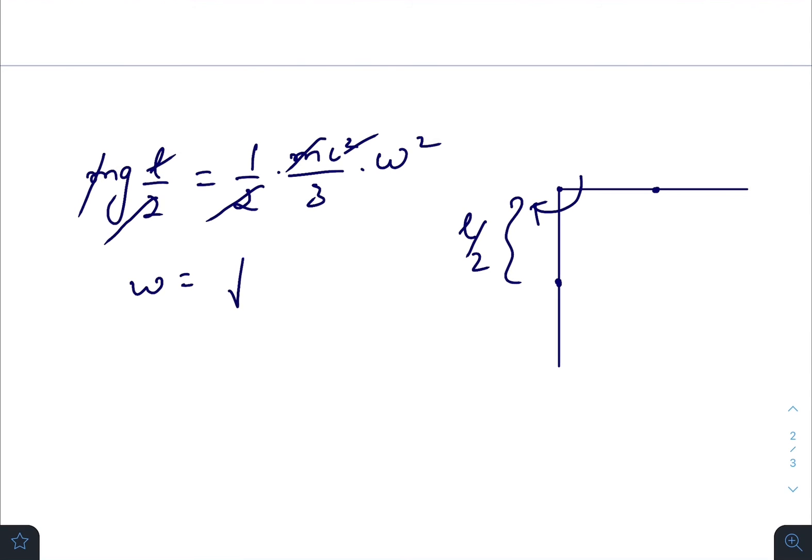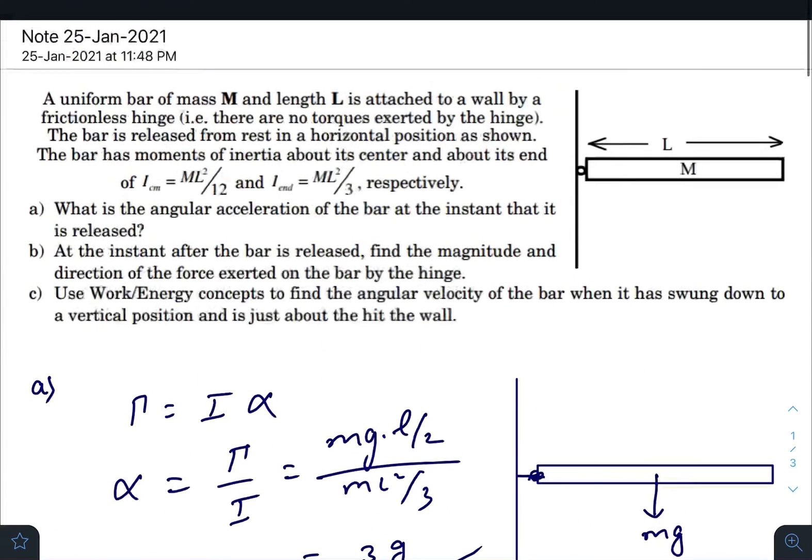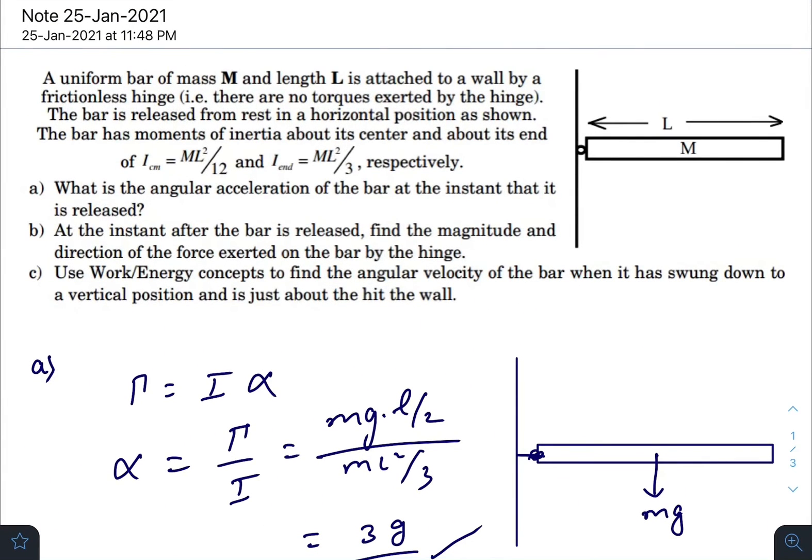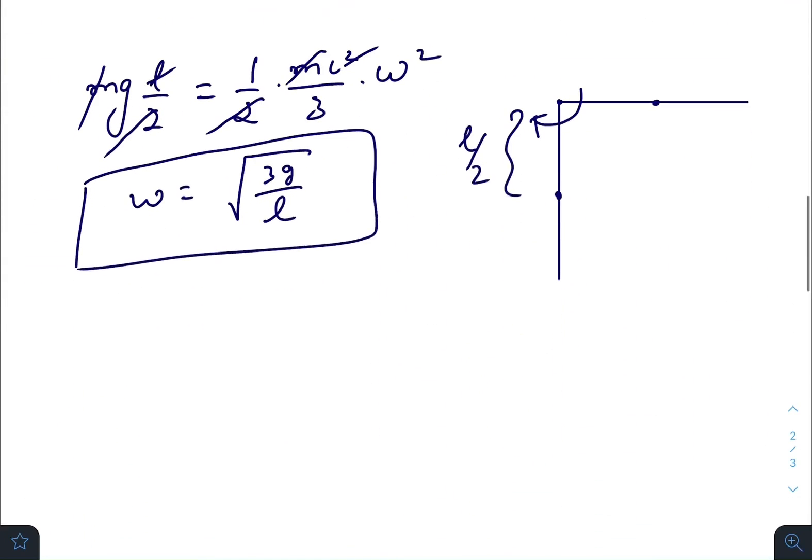Root over 3g divided by L. So this will be the angular velocity they have asked for when the rod is just about to hit the vertical wall.